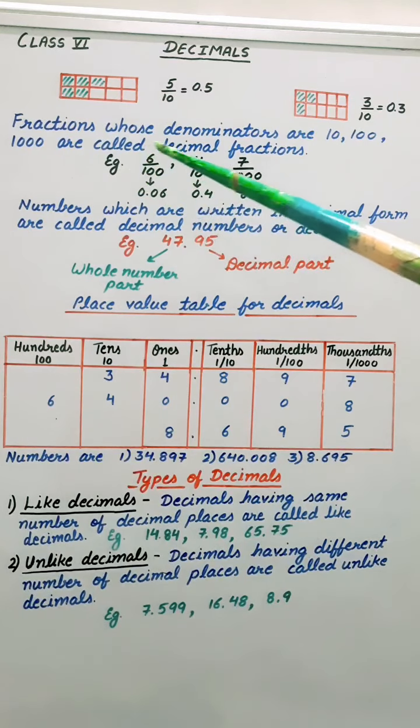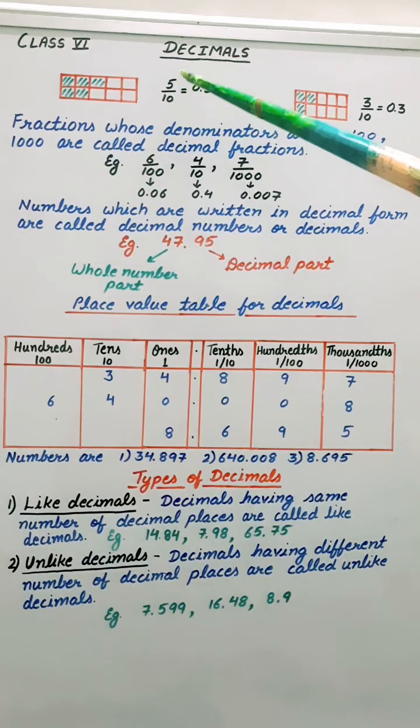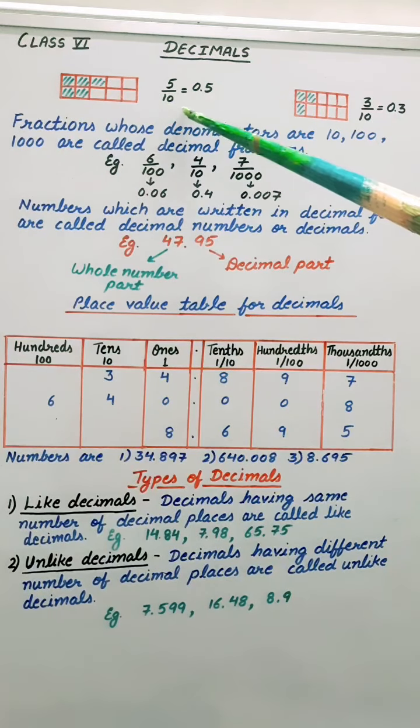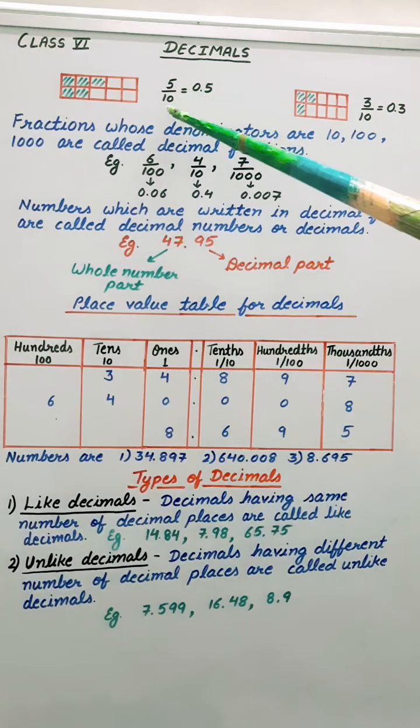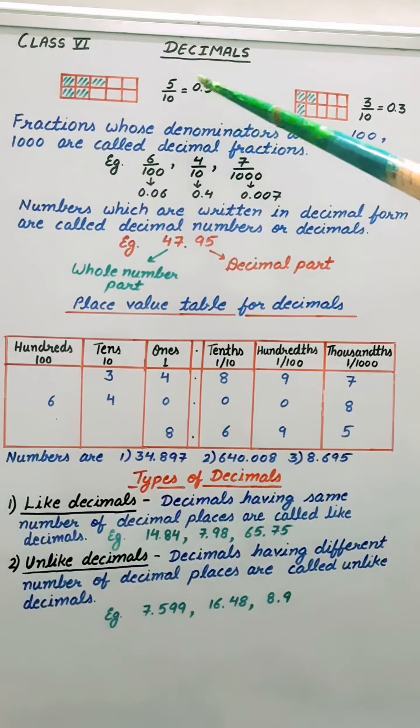For example, 6 by 100, 4 by 10, 7 by 1000. Now if I want to write it in decimals, then we have to see how many zeros are there in the denominator. Here 1, 0. So we will count 1 digit and put decimal. So 0.5.